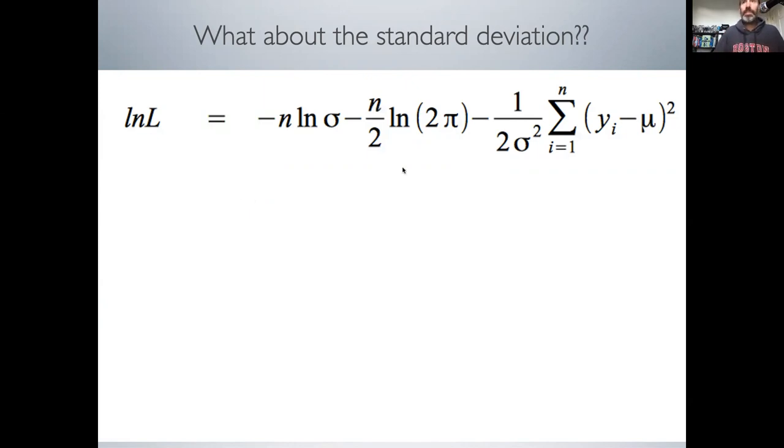This is a normal distribution with n data points in the vector y. We estimated the mean initially, but now we're going to estimate sigma. To estimate sigma, we take the derivative with respect to sigma instead of with respect to mu.